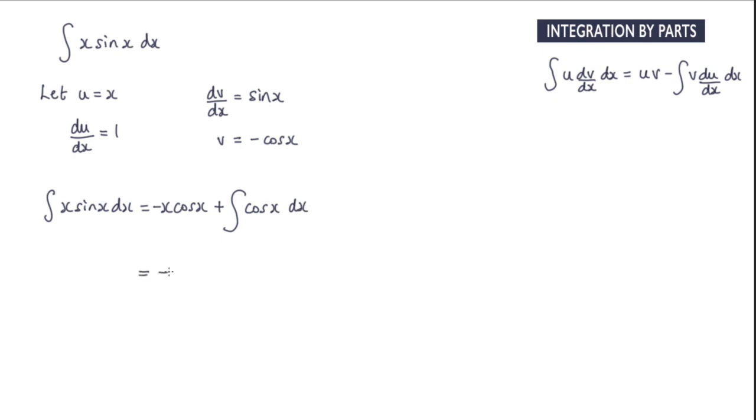So what we have is negative x cos x plus the integral of cos x is sin x. And then we just need to add on the constant of integration.